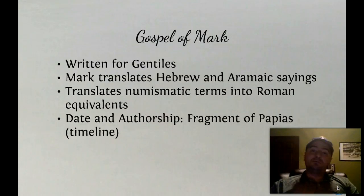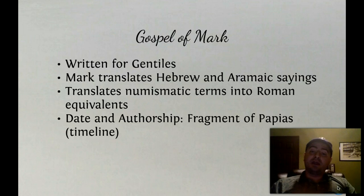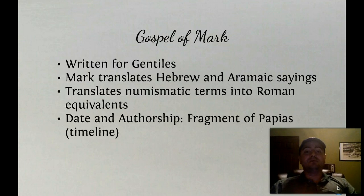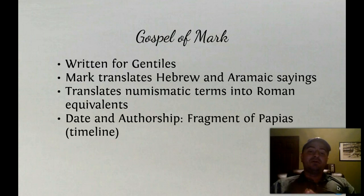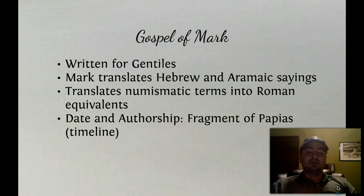The Gospel of Mark, which most people think was written for Gentiles, has very good reasons for this view. Mark translates Hebrew and Aramaic sayings into Greek or Latin so that the Gentile reader could understand them. He translates numismatic terms into Roman equivalents — for example, he uses denarii, a Roman coin, rather than the Hebrew or Aramaic equivalent.